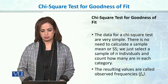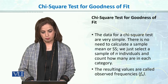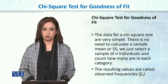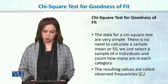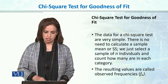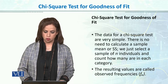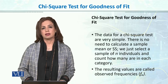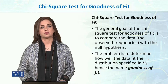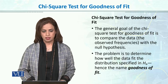The data for the chi-square test is very simple — there is no need to calculate a sample mean or standard deviation. We just select a sample of n individuals and count how many fall into each category. The resulting values are called observed frequencies. In chi-square, we have observed frequencies and expected frequencies.